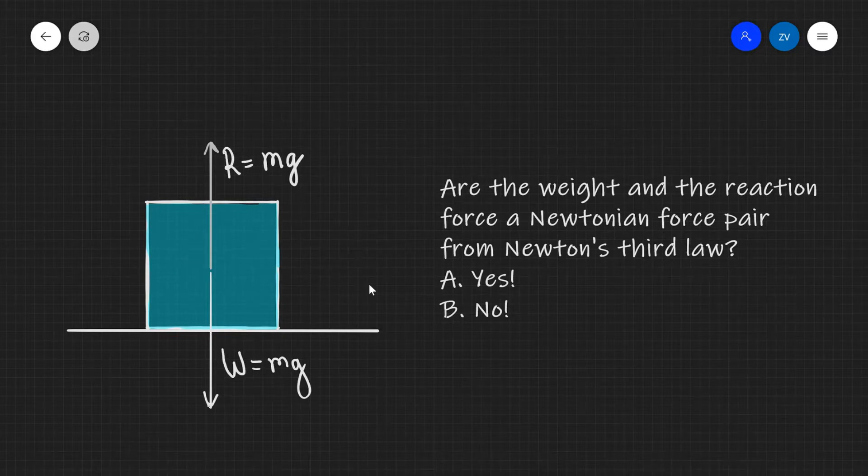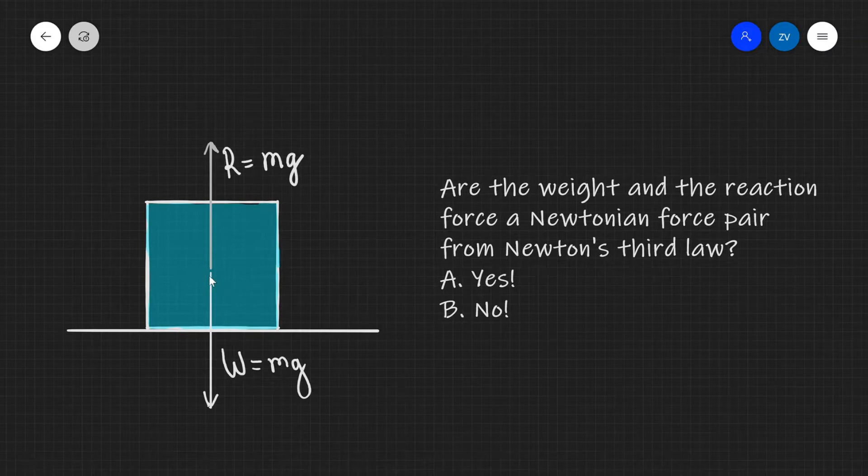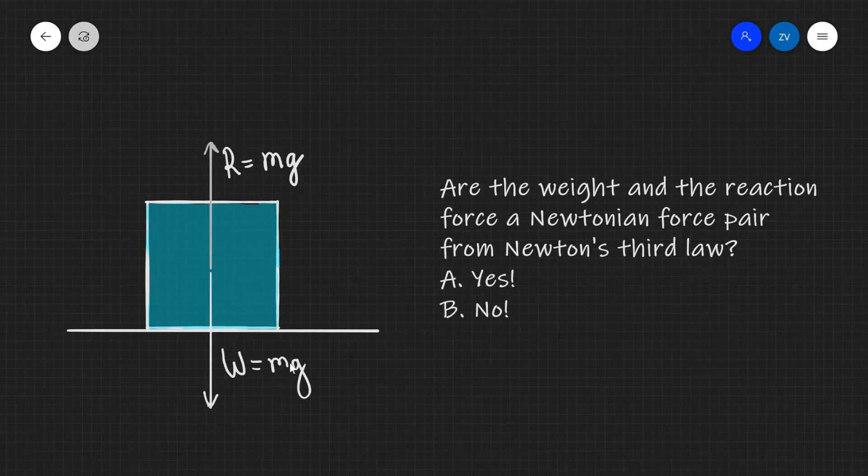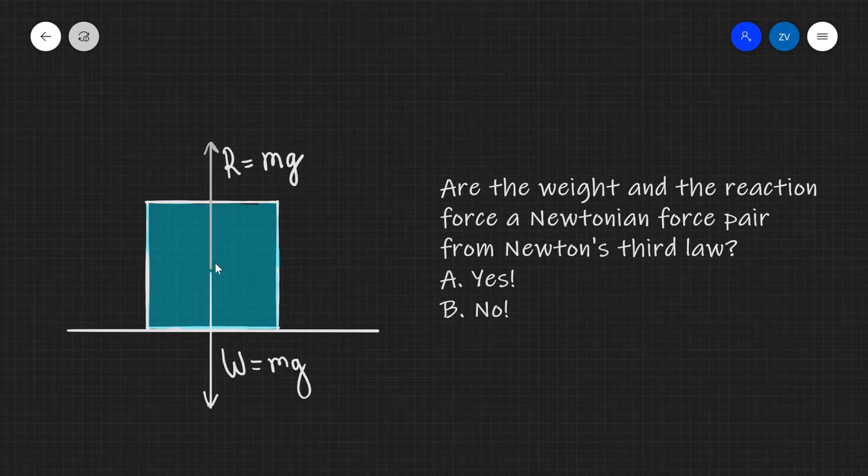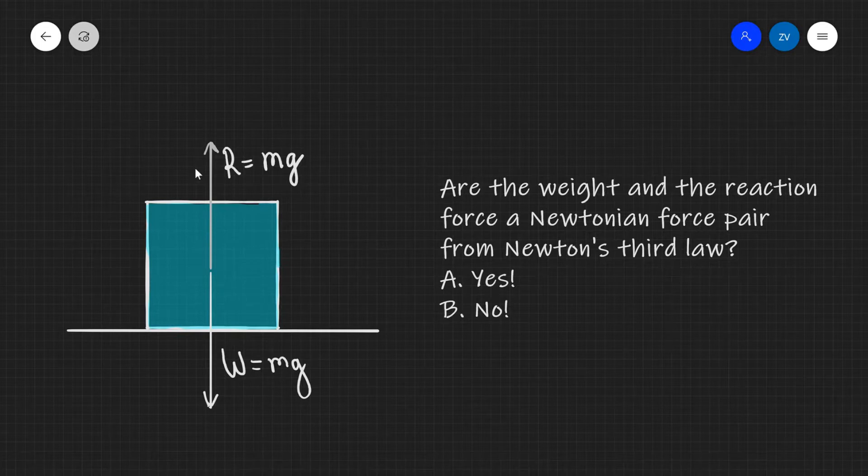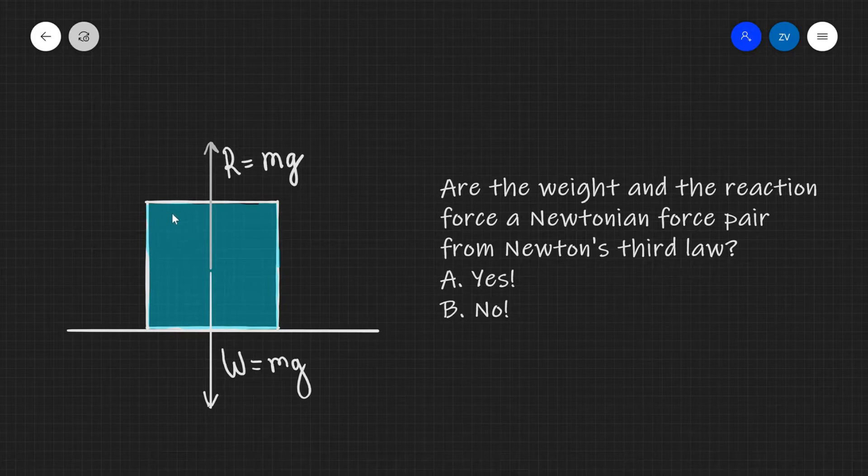There are two forces acting on this object. One of them is the weight acting straight down, as you can see the weight is equal to mg. Now because the forces on this object are balanced, there's also a reaction force R which is equal to the weight acting upwards. So we have two forces which are equal in magnitude and opposite in direction.